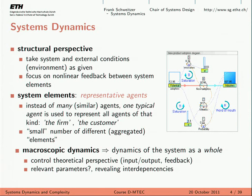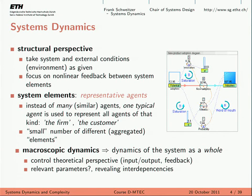The systems dynamics perspective considers elements as typical elements, or representative agents — which is what macroeconomics does all the time. We don't have different individuals, different firms, different countries — we have the typical individual, mathematically the average individual. If you know this, you will know what to expect from a systems dynamics model: you cannot expect it to tell you why your particular company doesn't work the way you want it to.